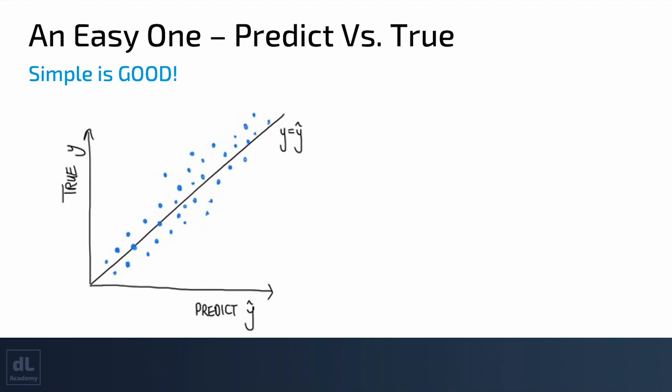The first one is really easy. It's for a regression task, supervised learning where we use labeled data to predict a continuous variable, a number. One easy plot is a simple scatter plot of the predicted against the true values.